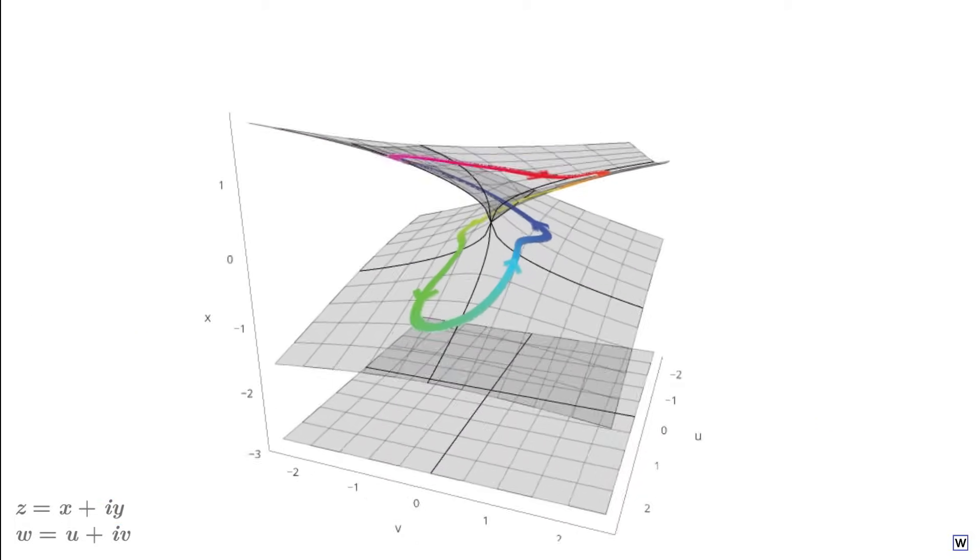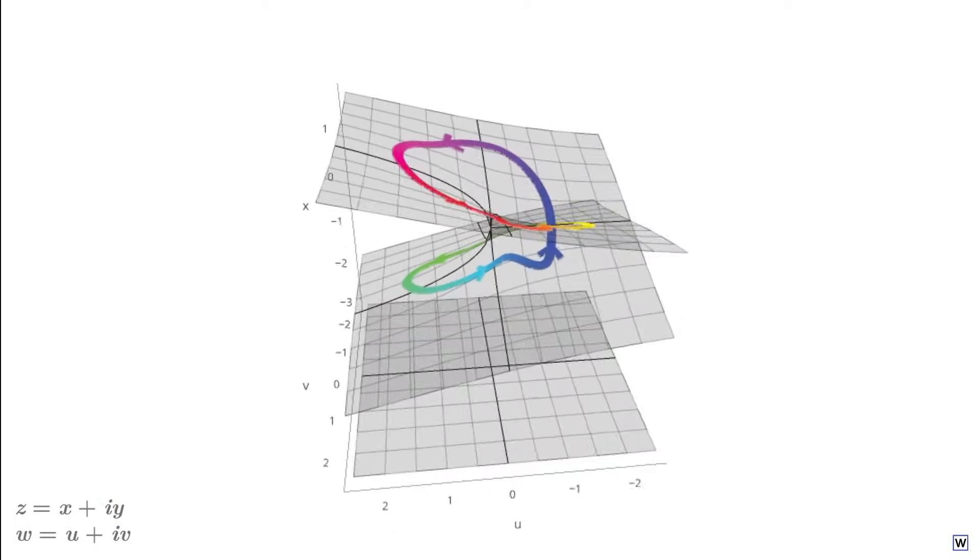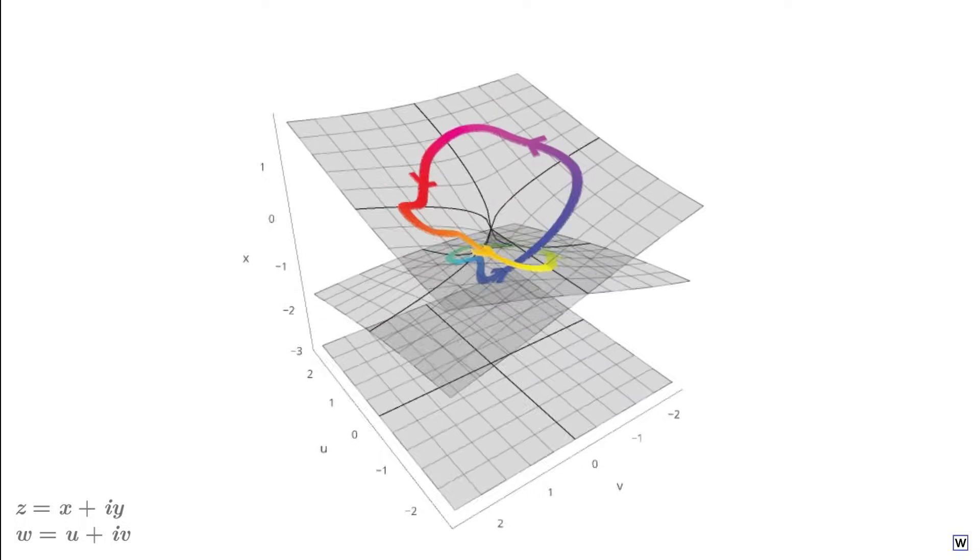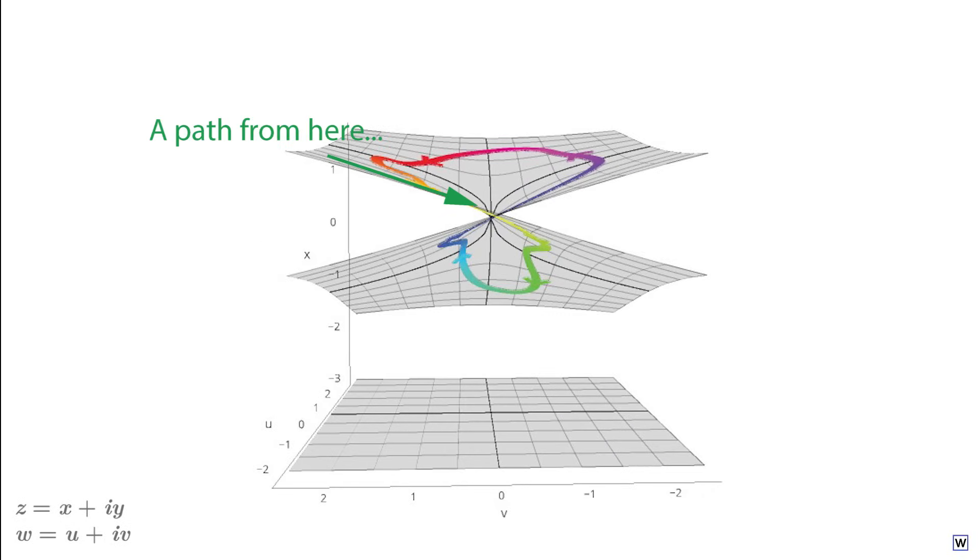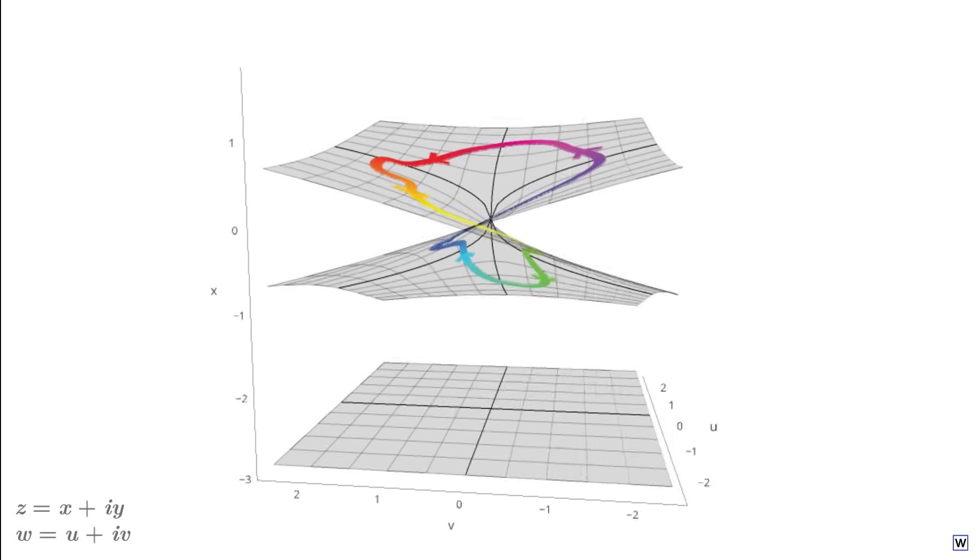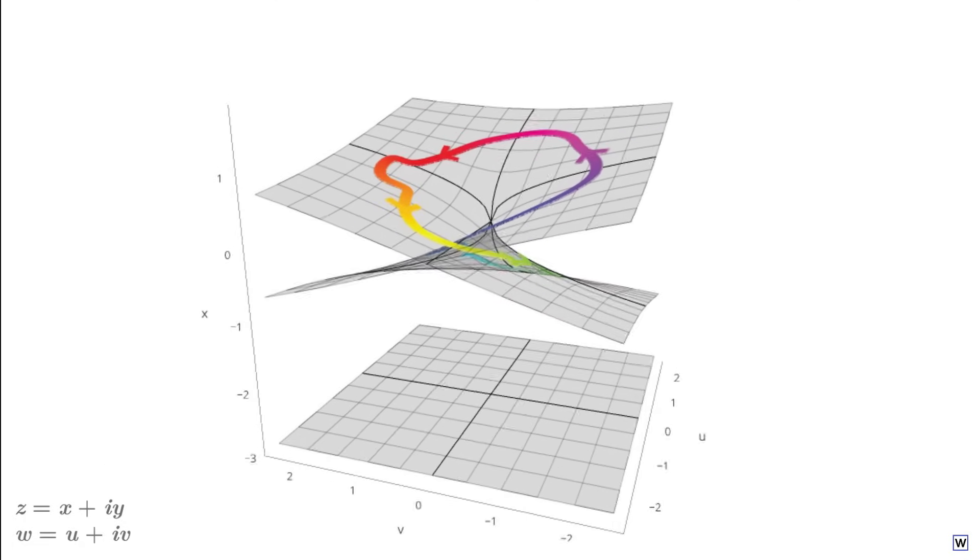This becomes important when trying to figure out if we've actually fixed our continuity problem. If we follow a path along a single branch of our Riemann surface, we run into a bit of a problem when we hit this self-intersection. After all, which way should we go, up or down? To answer this question, let's try to figure out why our surface self-intersects in the first place.